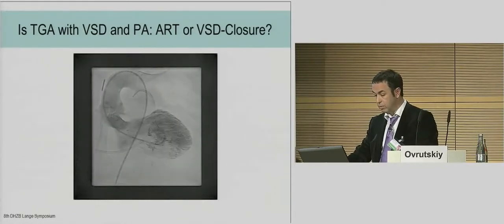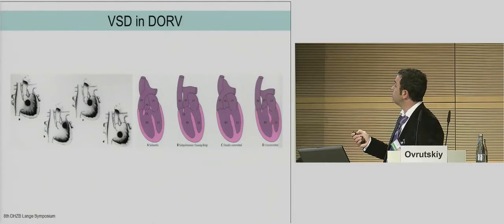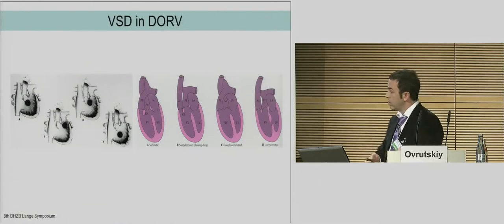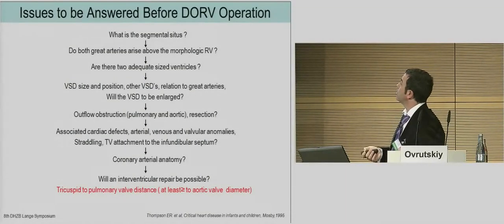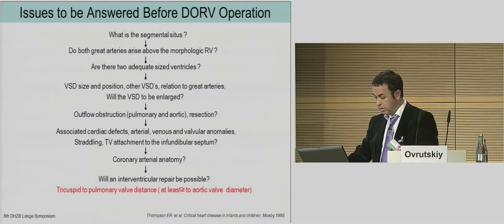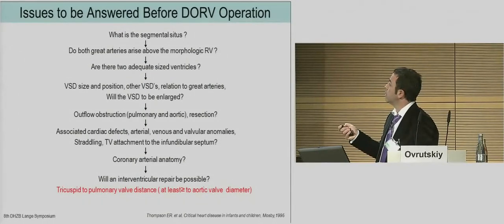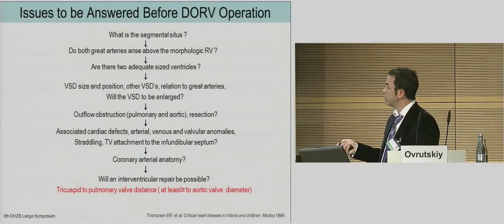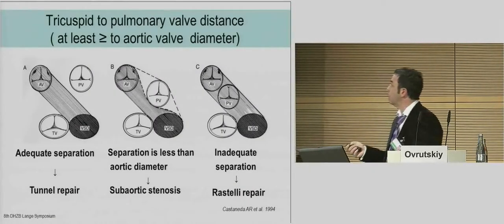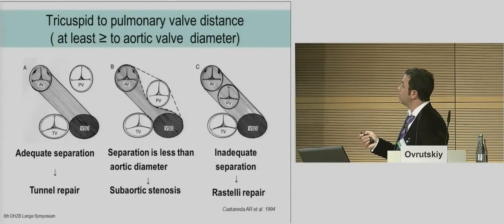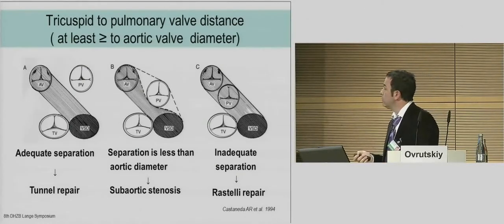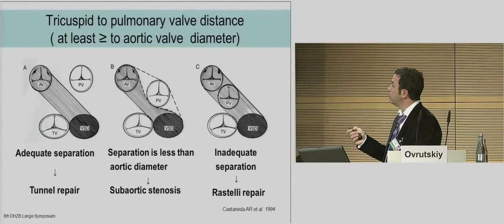The necessity of arterial switch operation, especially in double outlet, depends on different VSD positions: subaortic, subpulmonary, double committed, uncommitted, and the different positions of the arteries — all of this must be known before the operation. For double outlet right ventricle, thanks to Professor Alexio who provided this slide, we should know all of this from segmental analysis through all parts of ventricular and arterial anatomy. Also important is the tricuspid-to-pulmonary valve distance, because it determines if the interventricular tunnel is feasible. If this distance is too small, there is little space to place the patch and connect the VSD to the aorta.